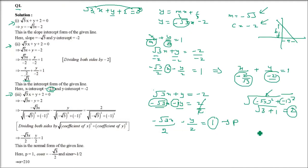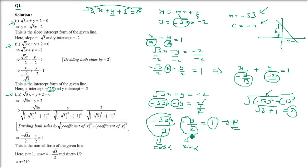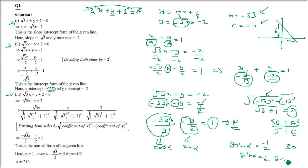Equating with x cos α + y sin α = p: cos α = -√3/2 and sin α = -1/2, and p = 1. Since both sin α and cos α are negative, we are in the third quadrant. sin 30° = 1/2 and cos 30° = √3/2, so we add 180°: 180° + 30° = 210°. Therefore alpha = 210°.